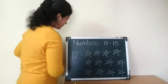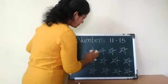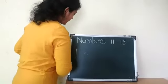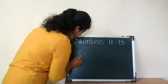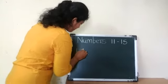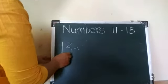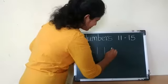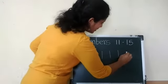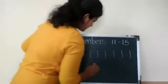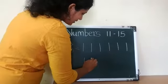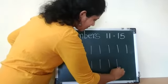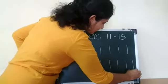Okay. Now the next number is 1, 3, 13. 1, 3, 13. 1, 2, 3, 4, 5, 6, 7, 8, 9, 10, 11, 12, 13.